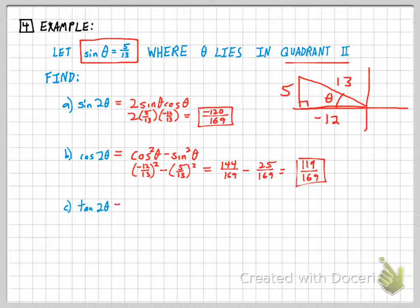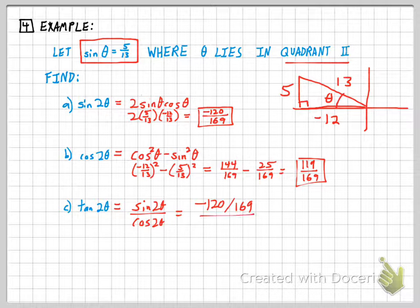I have a formula for tangent 2θ as well, but I'm going to use a little shortcut here because I know that the tangent of 2θ is simply the sine of 2θ over the cosine of 2θ. And if I know those individually, which I do—negative 120 over 169 and 119 over 169—I can get my answer that way, which is negative 120 over 119.